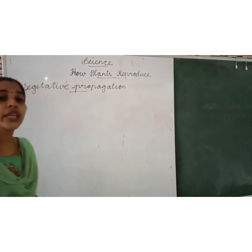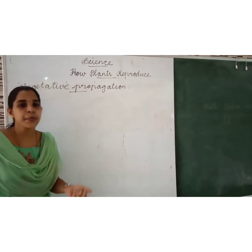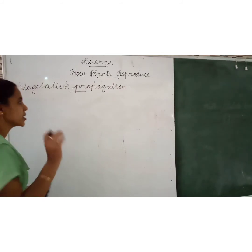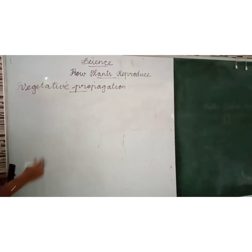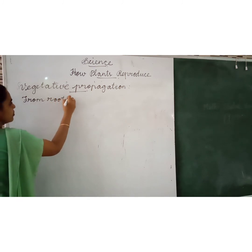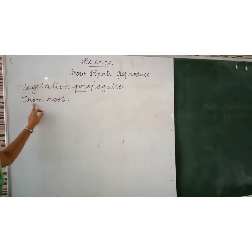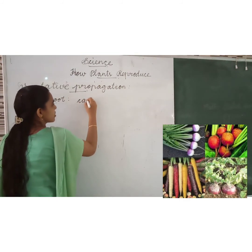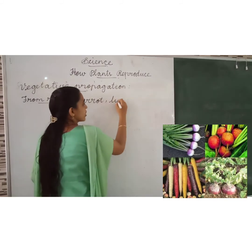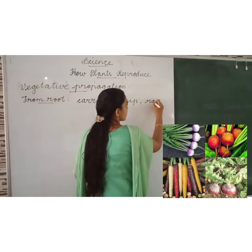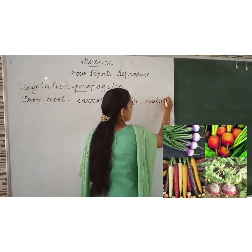Some plants reproduce through their seeds, but some plants reproduce from their roots, stems or leaves. First is from roots. Can you say some examples of plants that reproduce from their roots? Carrot, turnip and radish.